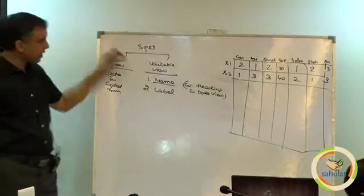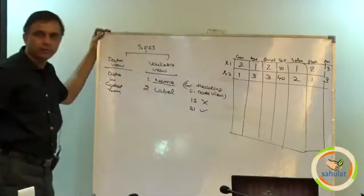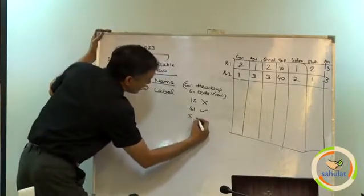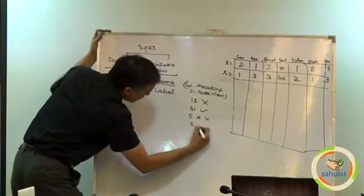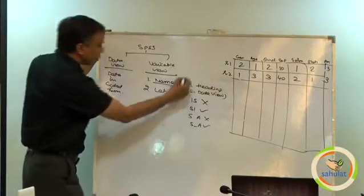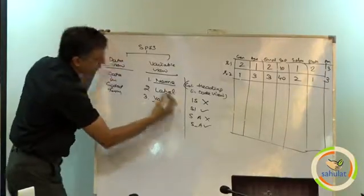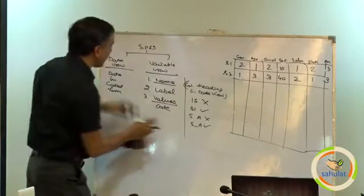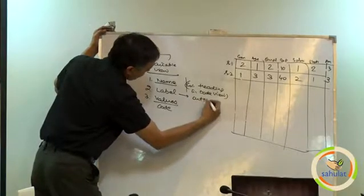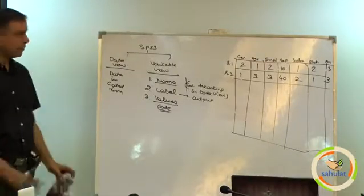There are certain rules. It should not start with one. You cannot write 1S, you can write S1. It must start with an alphabet. There are no spaces allowed. You cannot write S space A, you can write S underscore A, that is allowed. Just like the Gmail username, those sorts of certain rules are there. And the third is values, which means define the code here. Whatever you write in the name will go into the column heading, label will go to the output, and values are the codes that we define, and then we will enter the data.